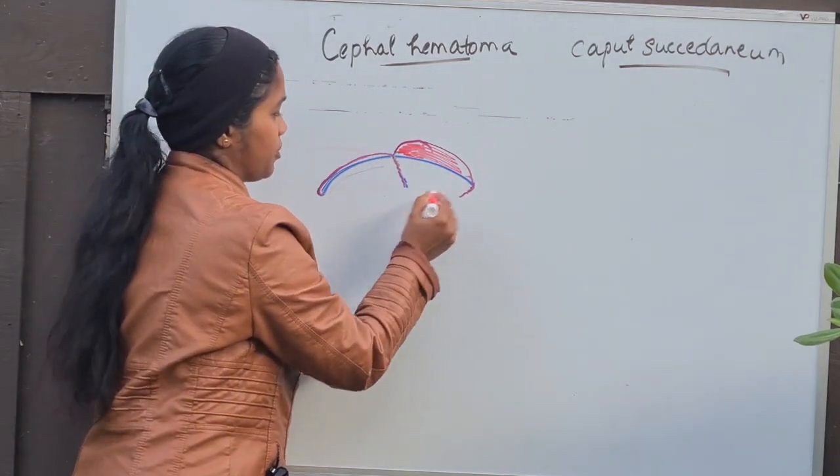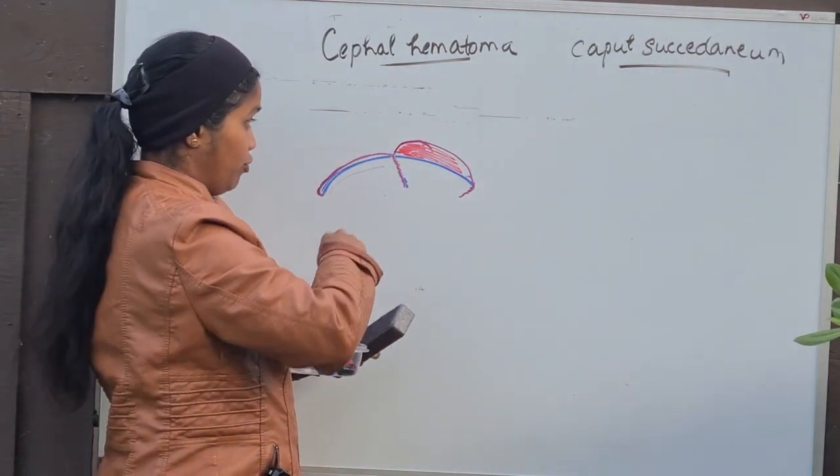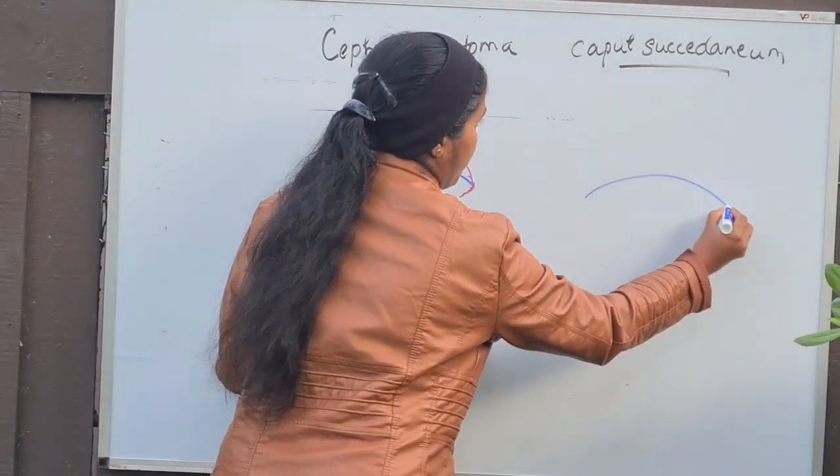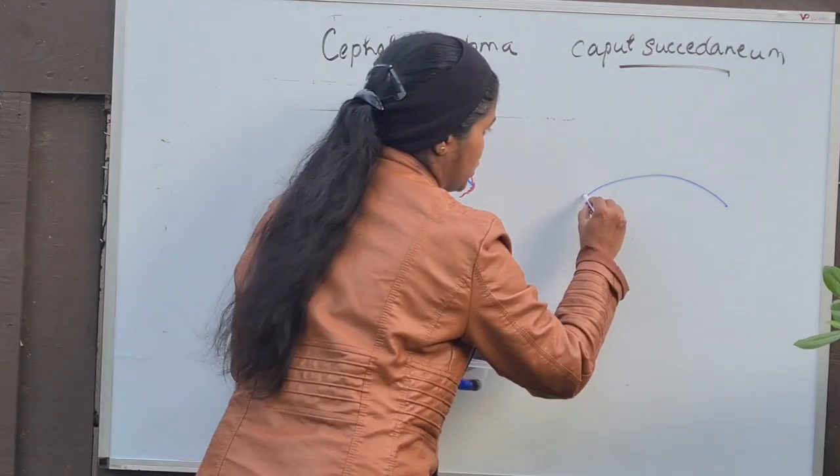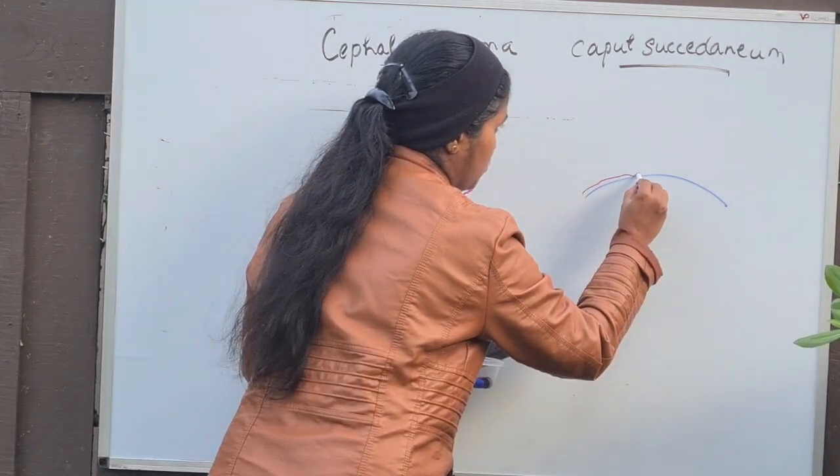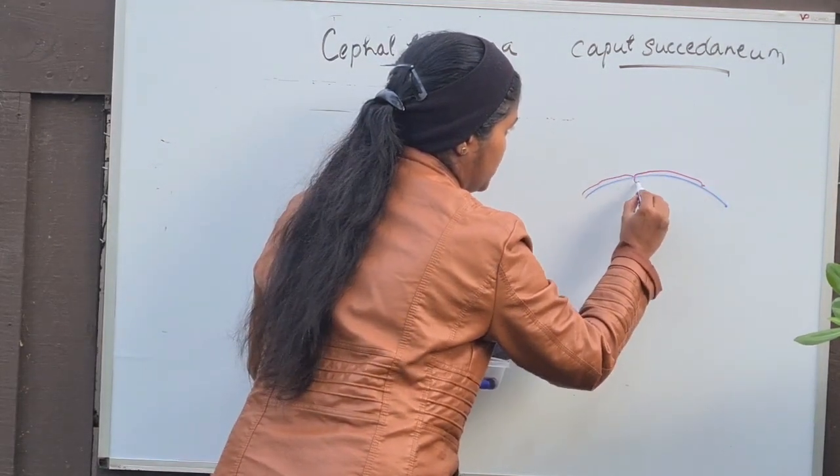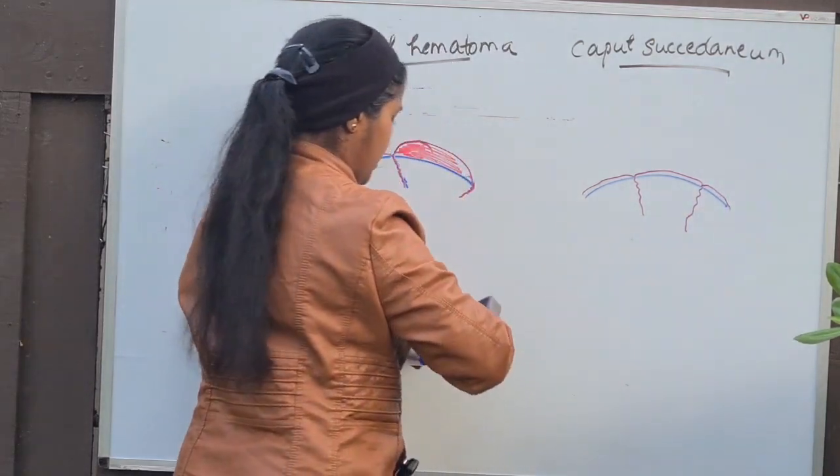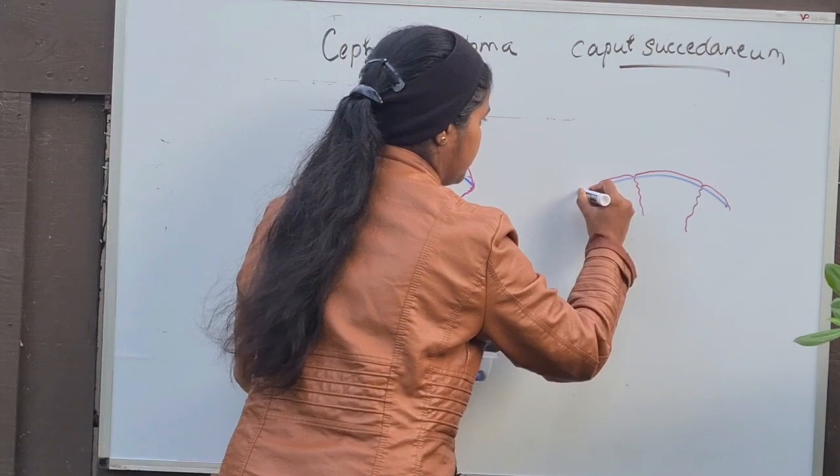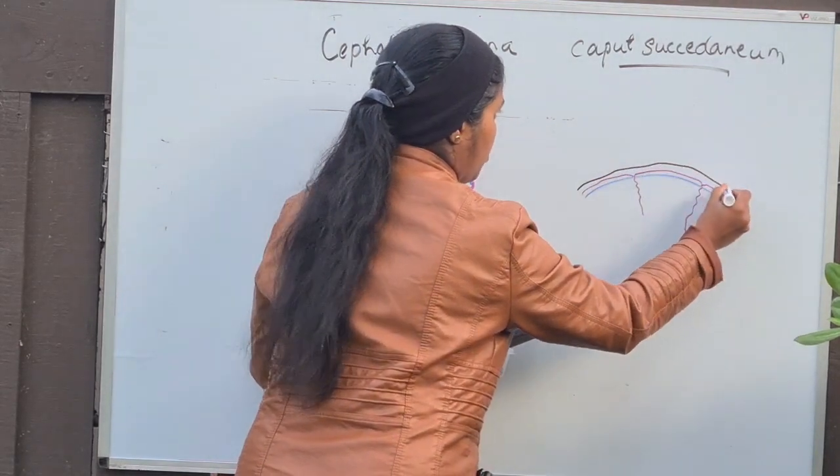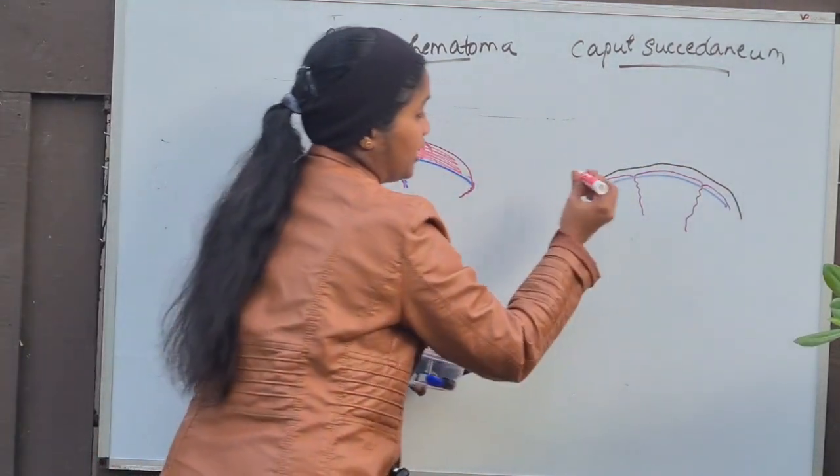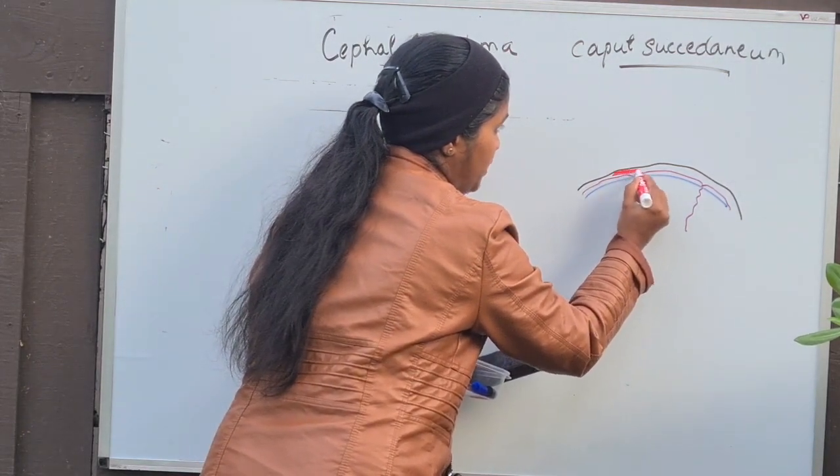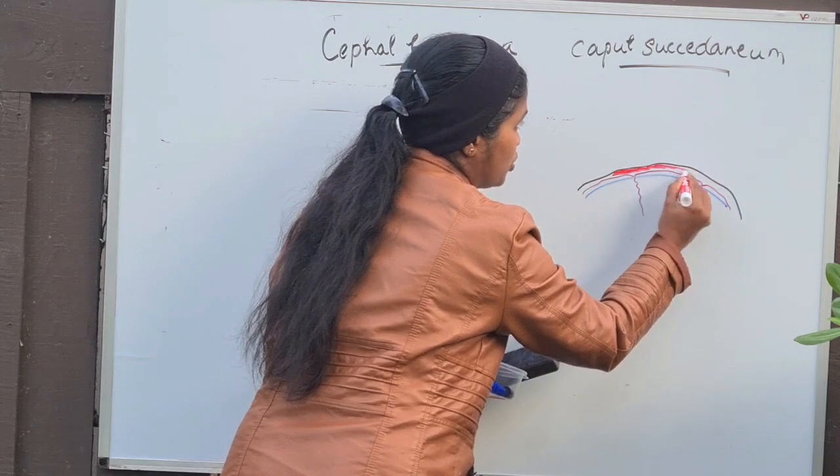So it will be staying within it. But on the other hand, if you see caput succedaneum, say for example, this is the skull bone and here you are having a periosteum. This is the suture and it just discontinues with the suture. And here we are having the skin. Whereas in caput succedaneum, the blood collection is between the skin and the periosteum. So since the blood is collecting here, it can cross the suture lines.